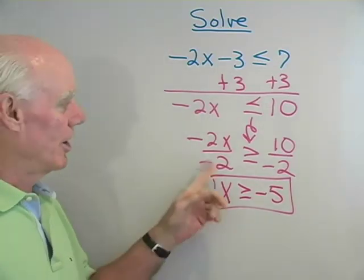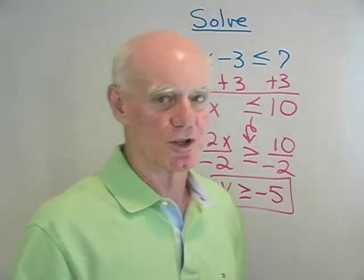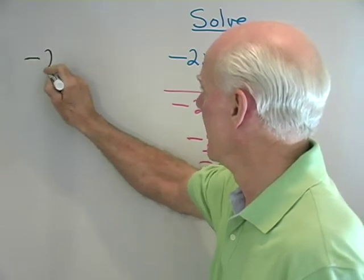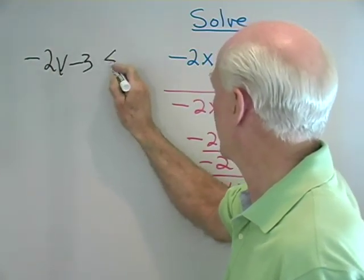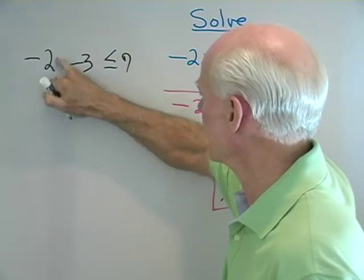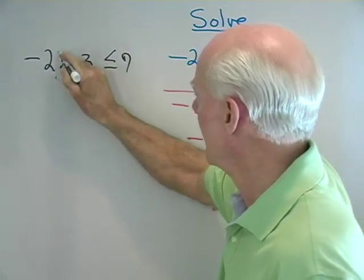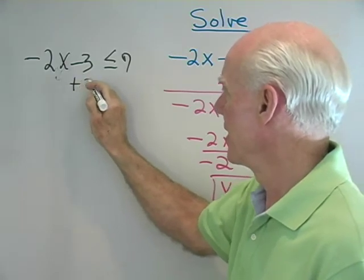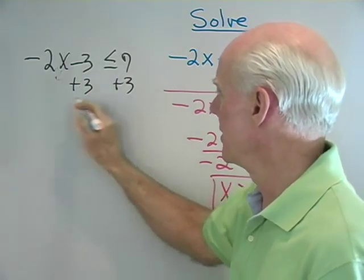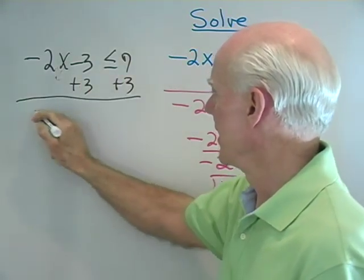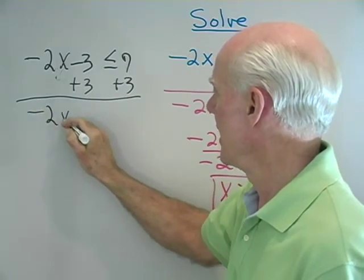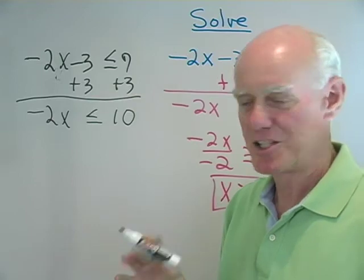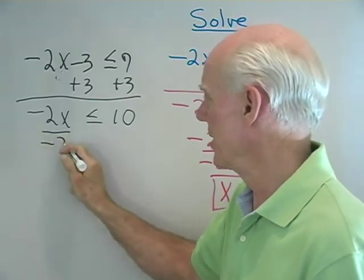I want to show you another way I see some of my students work this problem, to point out a little mistake. Let's write the problem again: negative 2x minus 3 less than or equal to 7. They'll start by adding 3 to both sides — that's all right. So negative 2x less than or equal to 10. And then the next step, I see them do this: divide both sides by negative 2. Now that right there is a mistake.